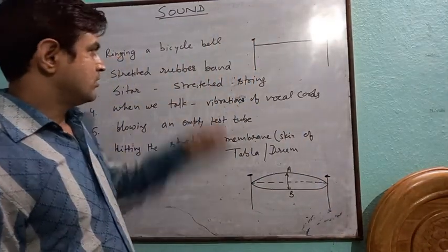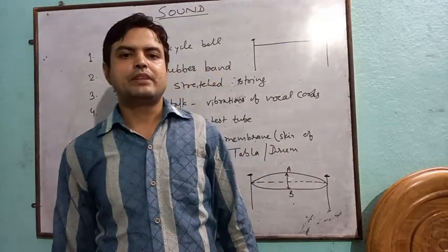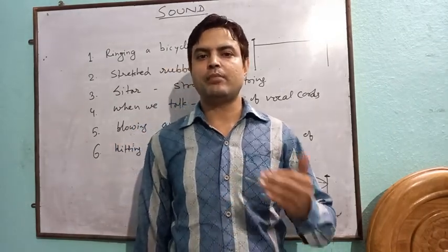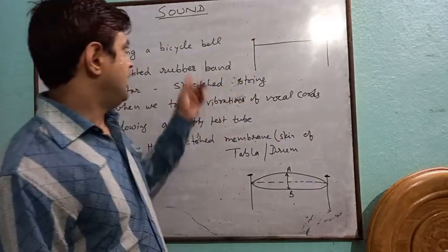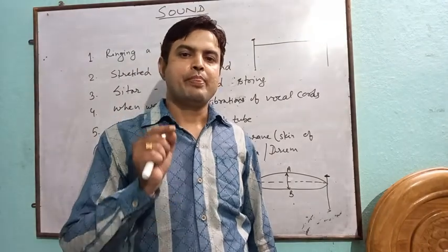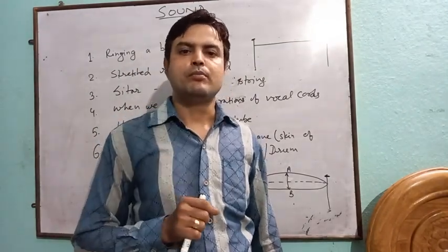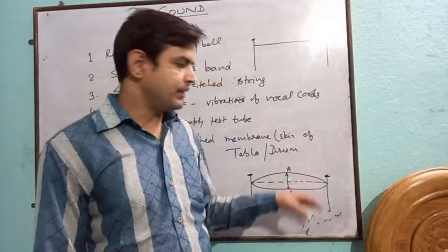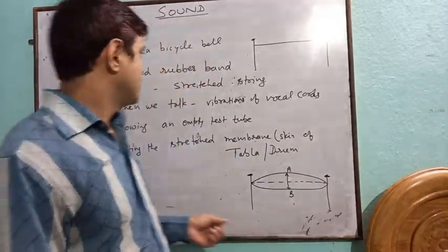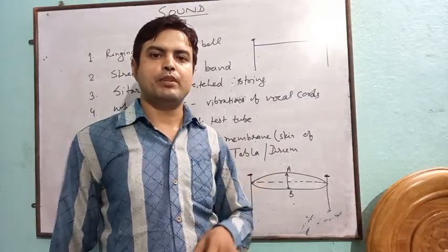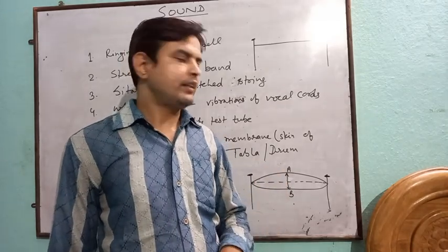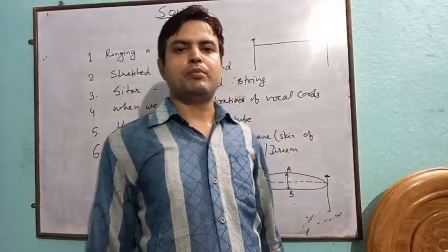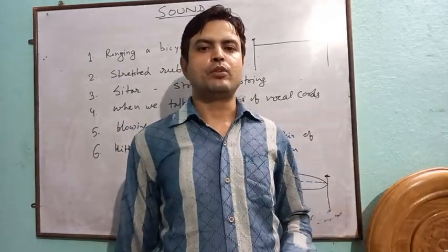These are the examples that show that objects produce sound by vibrating — an object cannot produce sound unless it vibrates. When we ring a bicycle bell, pluck a rubber band, pluck the stressed string of a sitar, or beat a tabla, we make them vibrate and they produce sound. From all these examples, we can conclude that only a vibrating body produces sound.